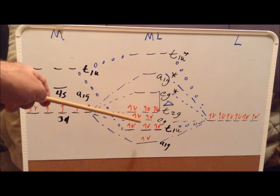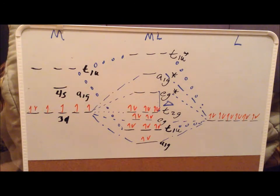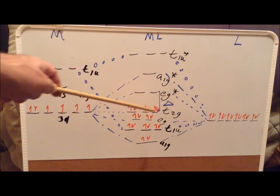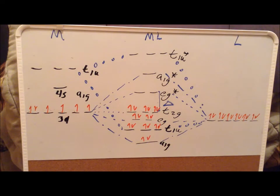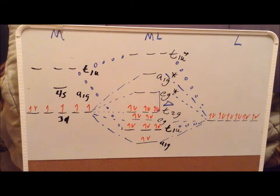So there's a lower level Eg bonding combination and an Eg antibonding combination. Since there are no group orbitals that have a T2g symmetry, these three T2g orbitals stay as non-bonding. They're essentially just ordinary 3d atomic orbitals that stay on the metal.